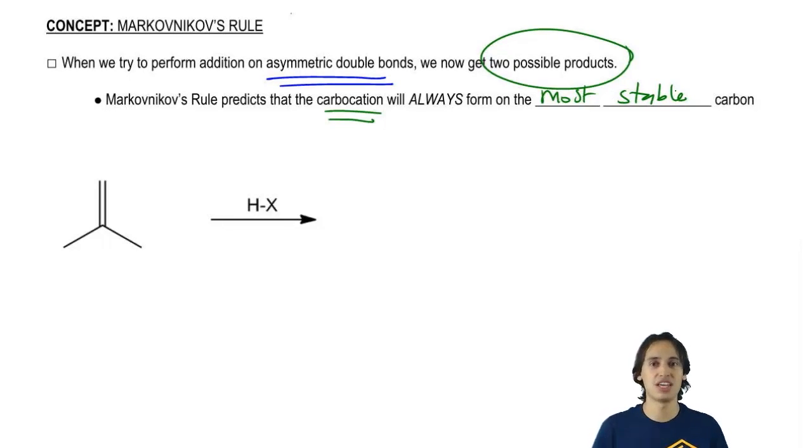For example, some professors say that Markovnikov's rule is that the H goes where the other H's are. I don't know why professors keep saying that because that's not the real definition of Markovnikov's rule. Yes, that is a shortcut, but it's not always true. I would rather you just memorize the true definition, which is that the carbocation is just going to go in the most stable location possible.